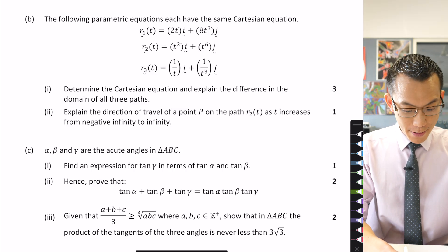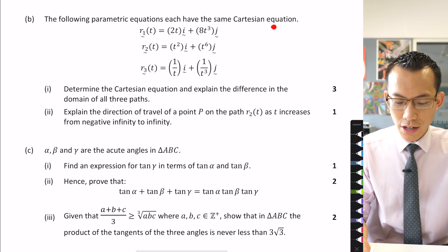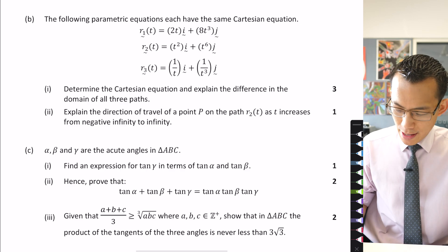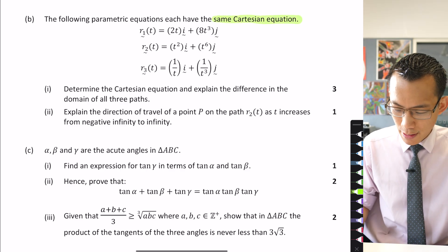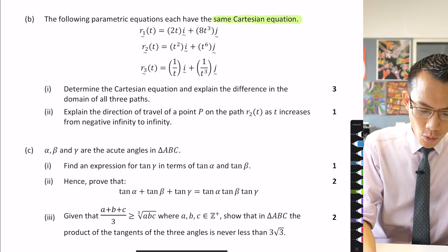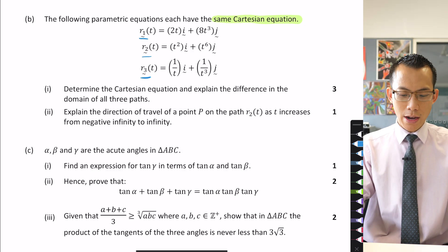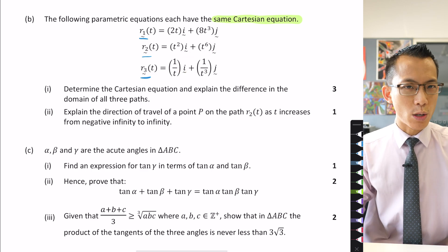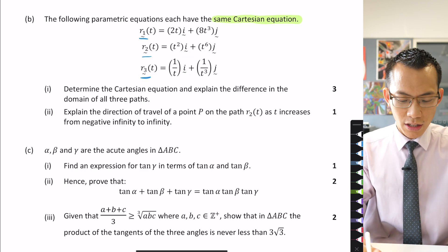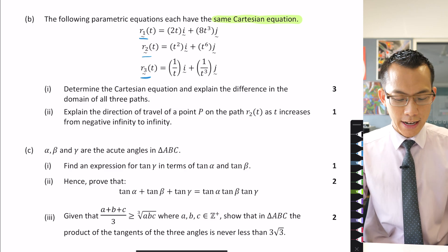The following parametric equations each have the same Cartesian equation. You've got this fact here which apparently applies to one, two, three different parametric equations, and you can see these equations here — they're stated in a two-dimensional vector form with your i and your j unit vectors.